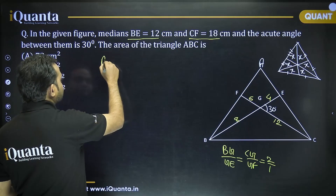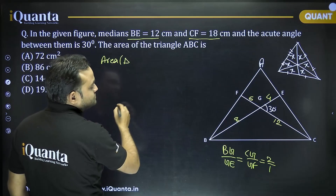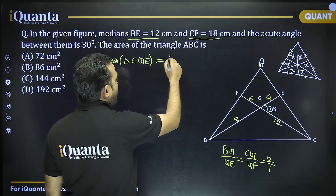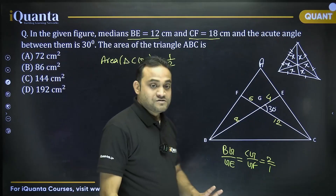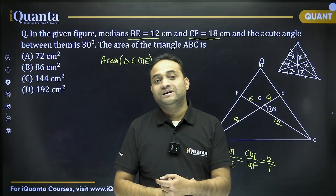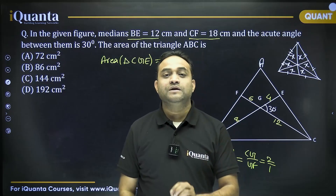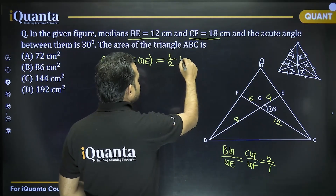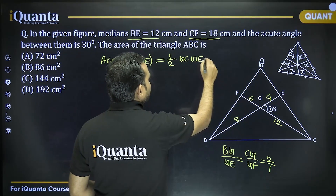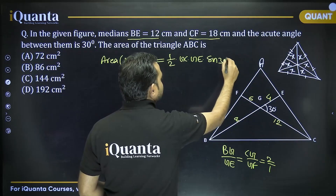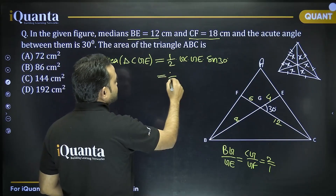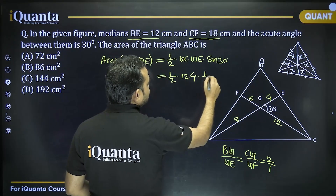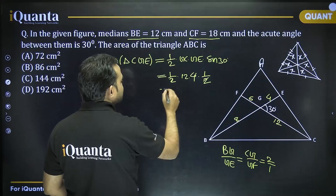The area of triangle CGE equals half times GC times GE times sin(30°), using the formula: Area = ½ × a × b × sin C, since two sides and the included angle are known.